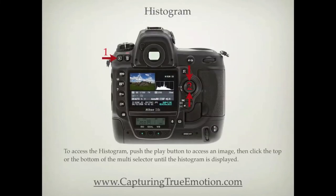To access the histogram, push the play button to access an image, then click the top or the bottom of the multi-selector until the histogram is displayed.